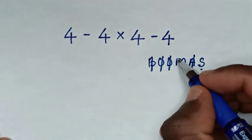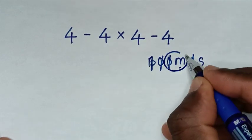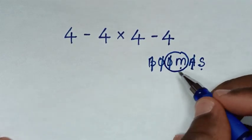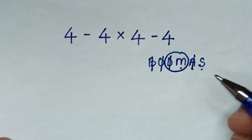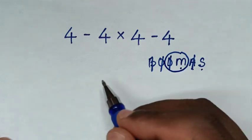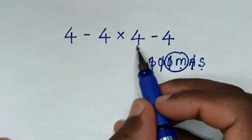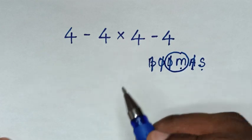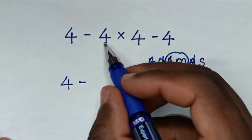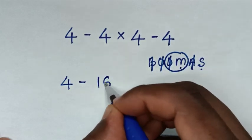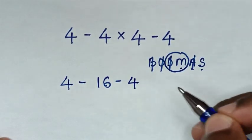So we'll start to deal with this group of division and multiplication. Whereas we don't have division, so we'll deal with this multiplication first. We have a multiplication of 4 times 4, which is 16. So it will be 4 minus 16, then minus 4.